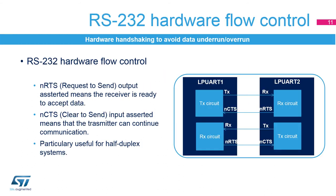In the RS-232 standard, it is possible to control the serial data flow between two devices by using the NCTS input and the NRTS output. These two lines allow the receiver and the transmitter to alert each other of their state. This slide shows how to connect two devices in this mode. The idea is to prevent dropped bytes or conflicts in case of half-duplex communication.